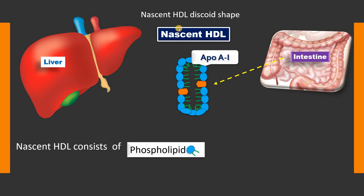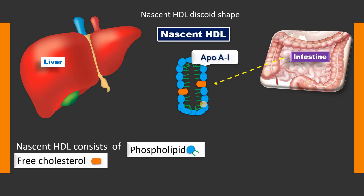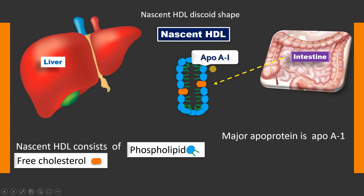There is a monolayer of phospholipids and free cholesterol. There is almost nil cholesterol ester or triglycerides in nascent HDL. The nascent HDL contains an apoprotein called apolipoprotein A1.